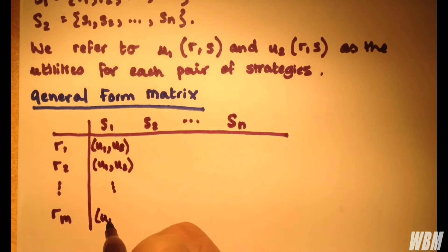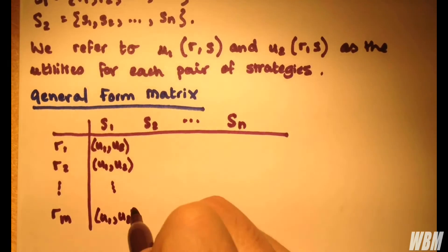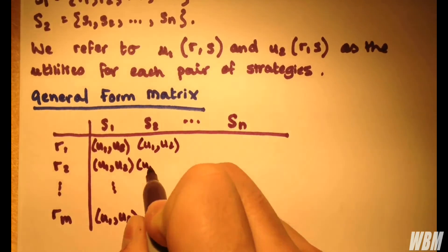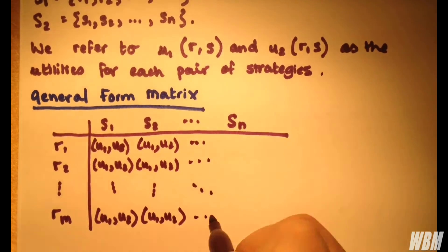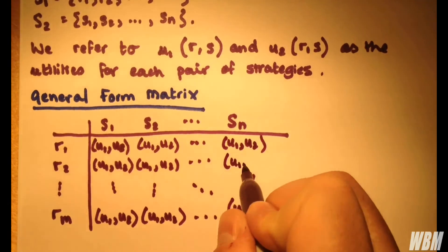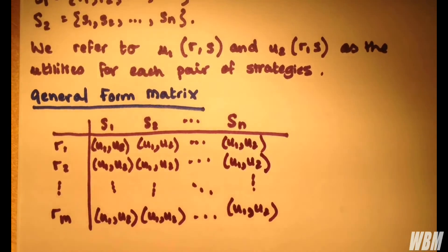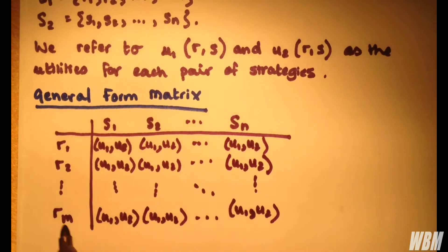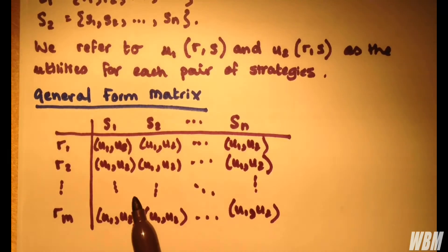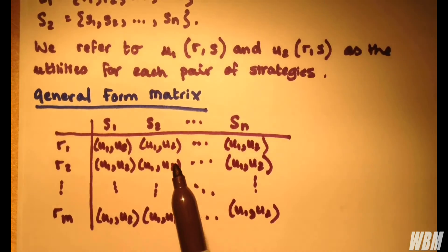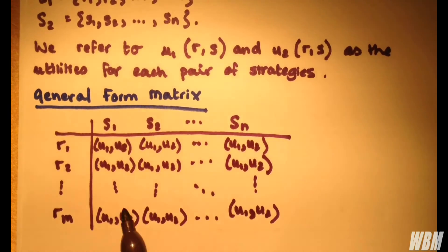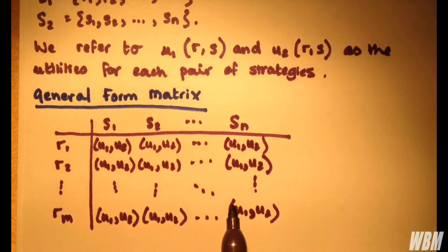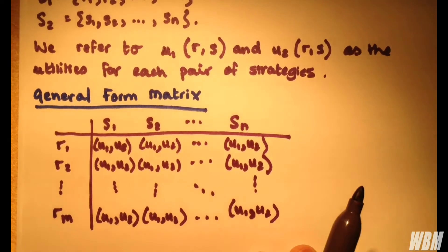We've filled in the table. So there's our general form matrix. Both players will want to maximize their values for both U1 and U2. Quite how they maximize these values and how they come to make these decisions is basically what game theory is all about. I'm going to give you a quick example of something known as the Prisoner's Dilemma.